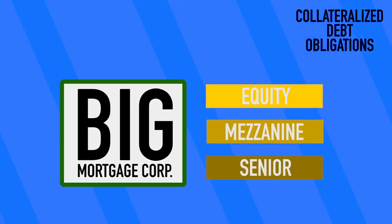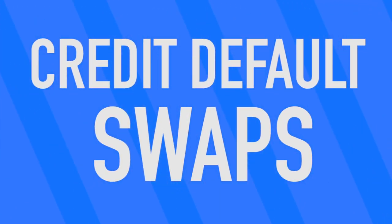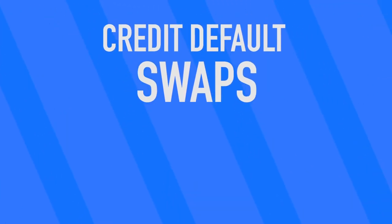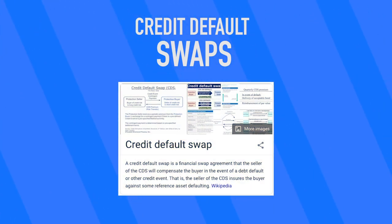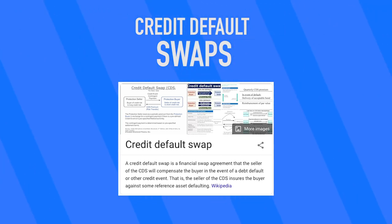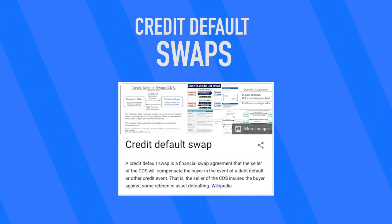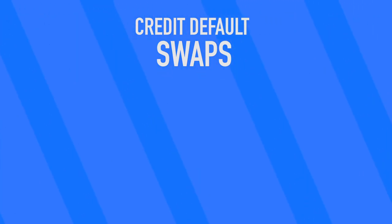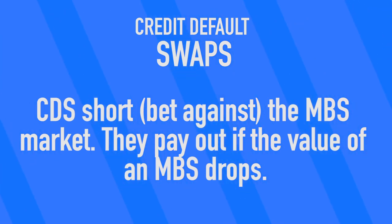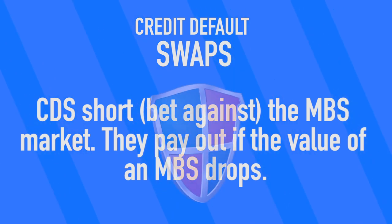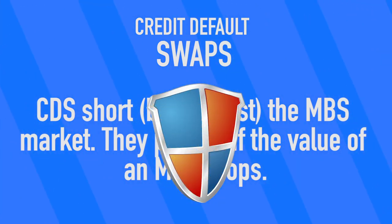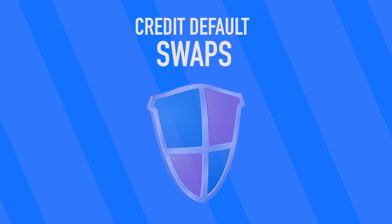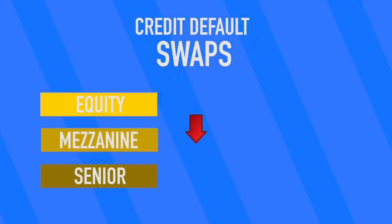Now, on to the big kicker: credit default swaps. Credit default swaps are essentially just insurance on a security, meaning on a share. Equity tranche buyers might buy these assets in case their shares become worthless, so they'd be able to get some money back and their losses aren't as bad. In essence, this insurance shorts the market — it only pays out if the mortgage-backed securities they insure fail. It's used to protect mortgage-backed security buyers from high risk. The payout would increase based on the tranche level, but it would also cost more up front.